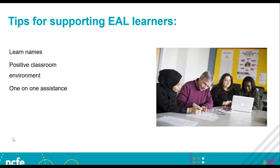One-on-one assistance: some EAL learners may not answer voluntarily or ask for help when needed. They might smile and nod to be polite without actually understanding, so individual coaching may be necessary, which is easier if their desk is positioned nearer to yours. Peer partners: it can be helpful to assign a responsible learner to help your EAL learner, especially if they share the same first language. An interpreter can help smooth out misunderstandings — this may be a paid member of staff or a volunteer parent or adult associated with your centre. Culture: it's important to have an awareness of your learner's culture to prevent misunderstandings, and to let your learner know their culture is respected so they feel more at home.